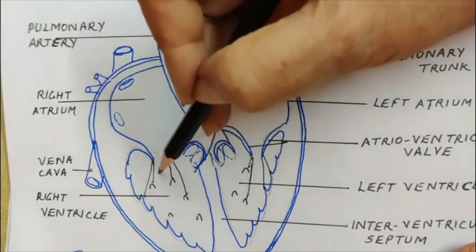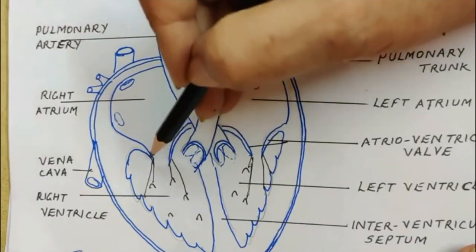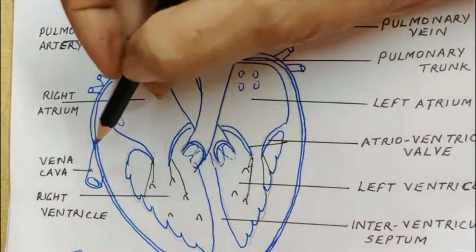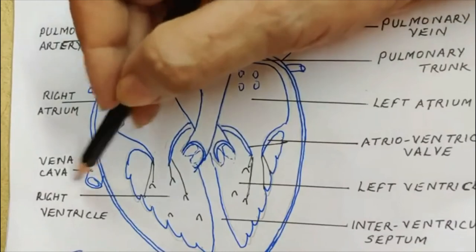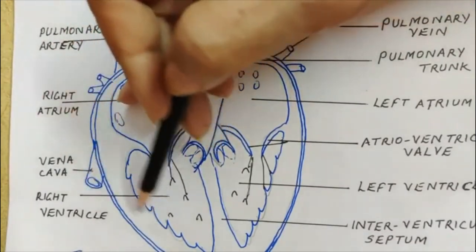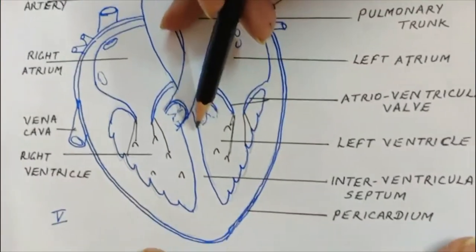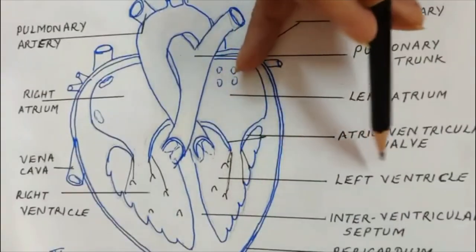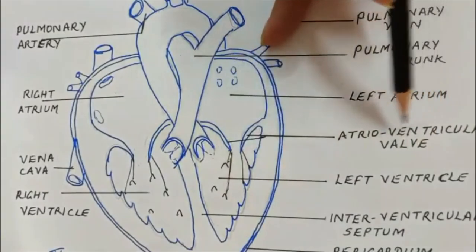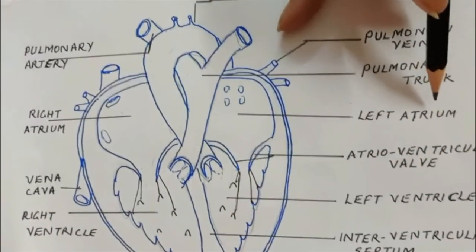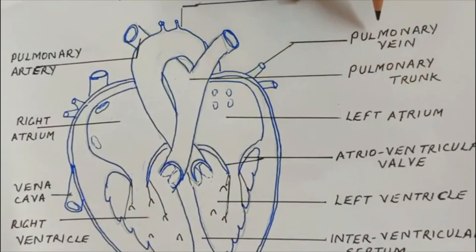I didn't show you that unevenness of the wall is meant for chordae tendineae. These are the elastic fibers which hold the flaps of the valve so that they don't collapse back side. These are the vena cava, this and this. Then right ventricle, thick wall, pericardium, septum, interventricular septum, pericardium I've shown you. Then this is the left ventricle, atrioventricular valves.